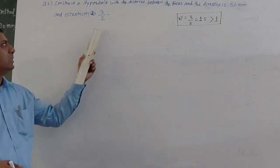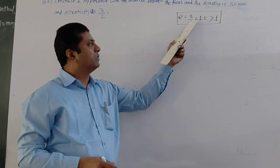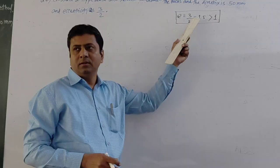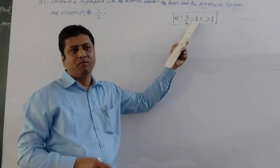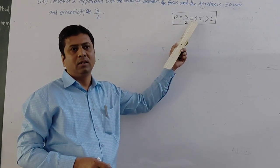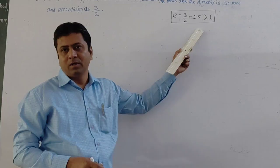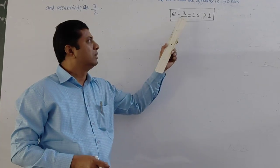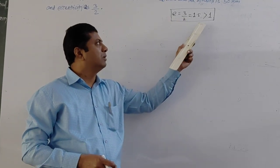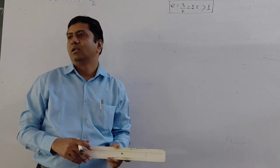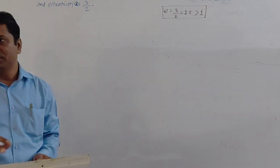Here the eccentricity is 3 by 2. If you calculate 3 by 2, it comes to 1.5, which means it is greater than 1. When eccentricity is greater than 1, we have to draw a hyperbola.